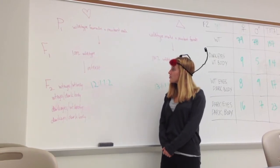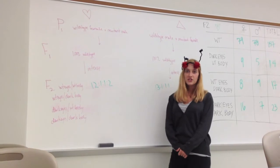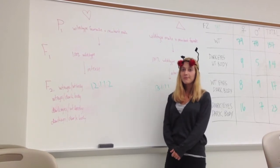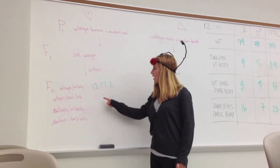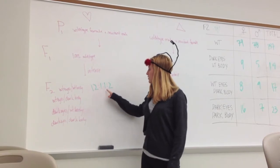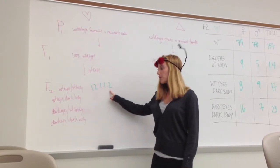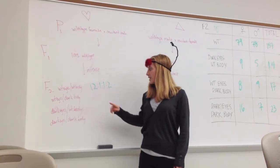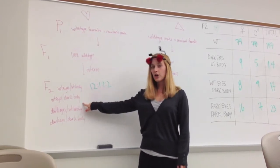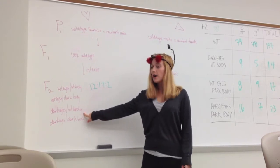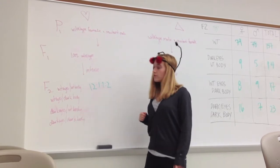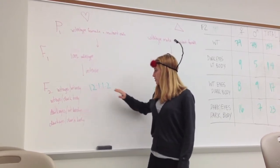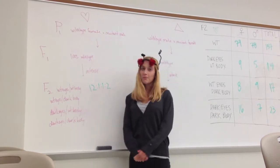And then we crossed those flies with their brothers and sisters. And our F2s came out in a 12 to 1 to 1 to 2 ratio. The 12 was wild type eyes, wild type body. The two ones were wild type eyes, dark body, and dark eyes, wild type body, respectively. And then the two was dark eyes, dark body.